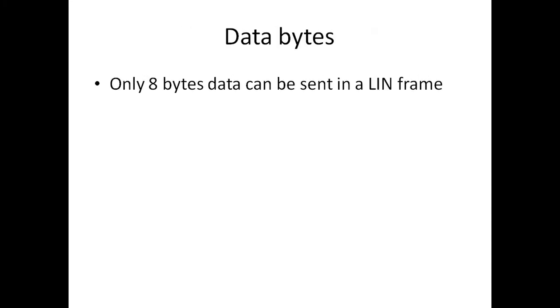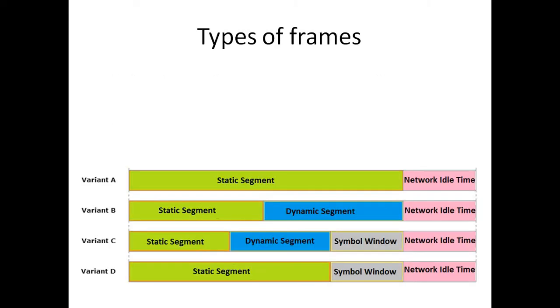Data bytes. In a CAN frame, maximum of 8 bytes can be sent. Whereas in FlexRay, which is much more than CAN, maximum of 254 bytes can be sent. This is one of the advantages of using FlexRay. FlexRay is 10 times faster than CAN as well.